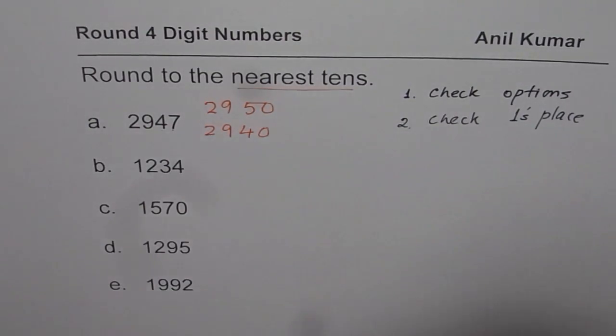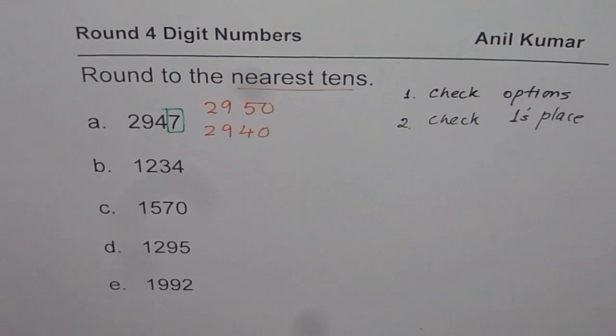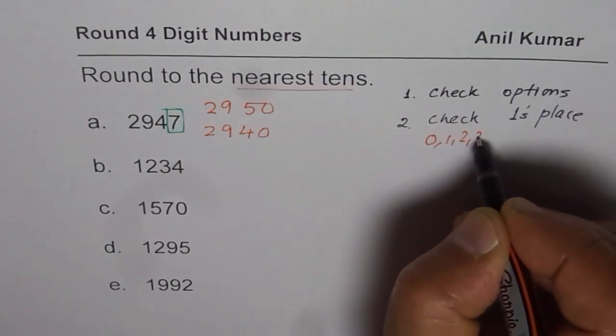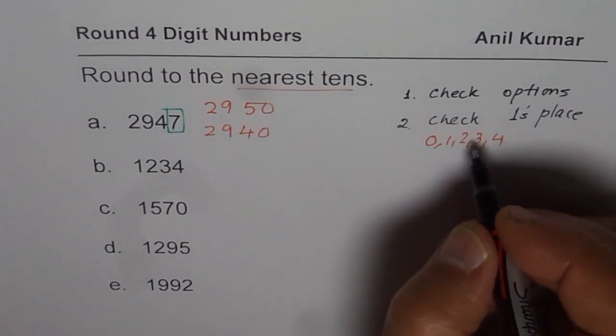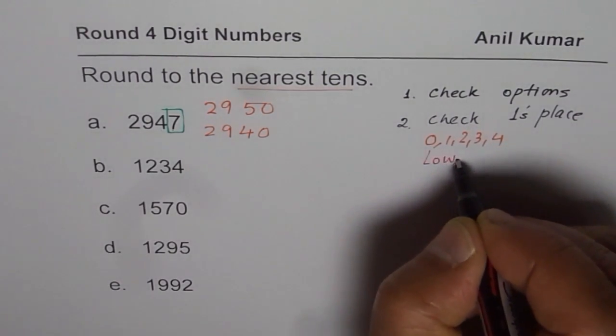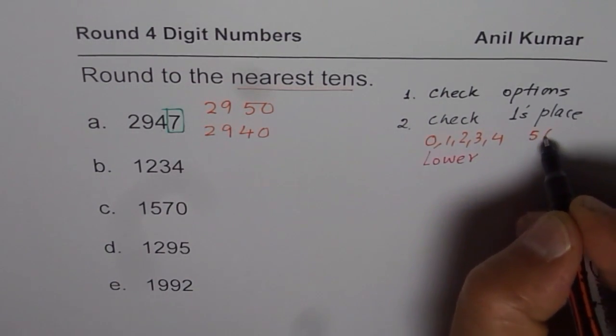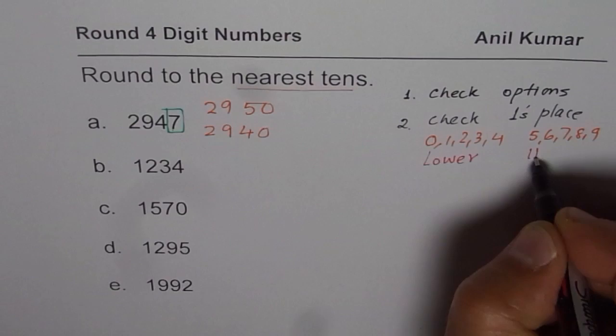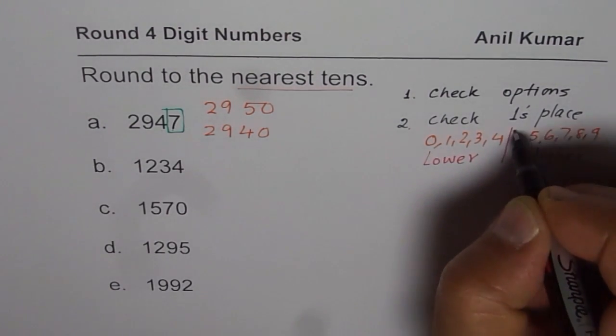So in our case, ones place is 7. Do you see that? Now, what happens? If ones place is between 0, 1, 2, 3, or 4, in that case, you have to round lower. But if the ones place is 5, 6, 7, 8, or 9, in that case, you should round higher. That is the kind of rule.